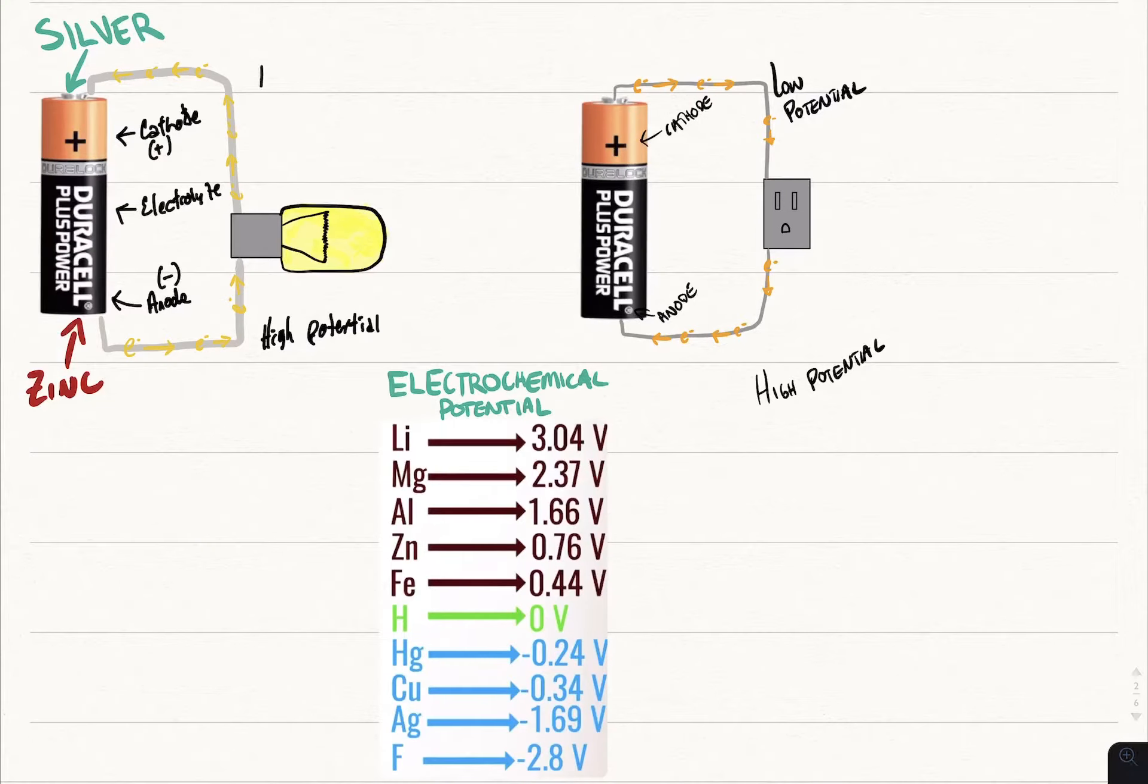And when the electrons move through something that can use electrons, they power it. So in this case you have your light bulb, you can power a car, you can power our computers, power anything you want.